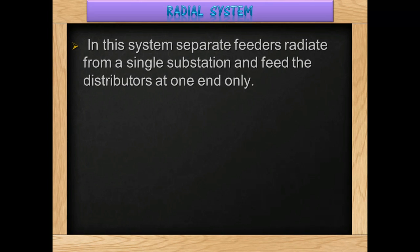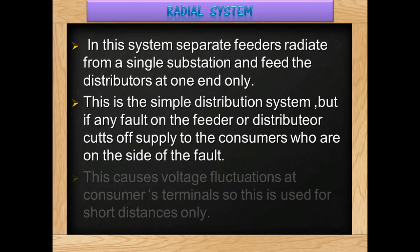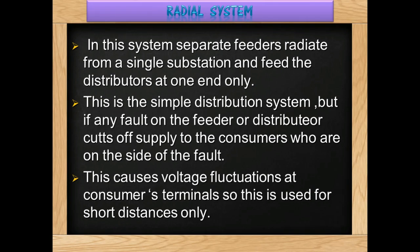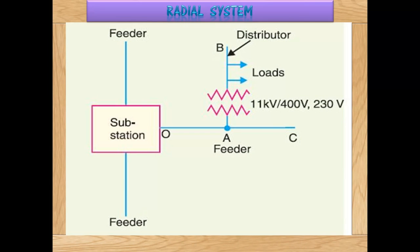Radial system: In this system, separate feeders radiate from a single substation and feed the distributors at one end only. This is a simple distribution system, but if any fault occurs on the feeder, it cuts off supply to consumers beyond the fault. This causes voltage fluctuations at consumer terminals, so this system is used for short distances only.